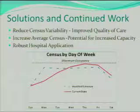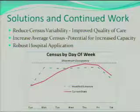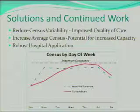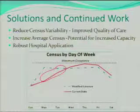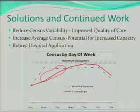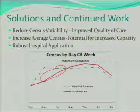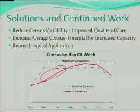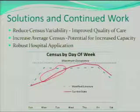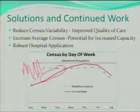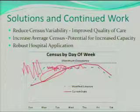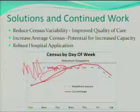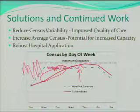Looking at the census by day of week graph, the red line shows the typical whale hump where early in the week you have a low average census, but by the end of the week you're reaching maximum occupancy — leading to the bed block and cancellations discussed earlier. By reducing variability to something matching the blue line, we have the opportunity to increase the average census, so the hospital can admit more patients because they know how long each patient will be there.